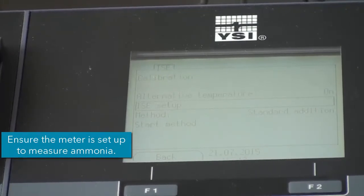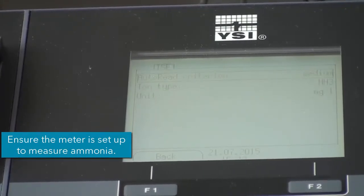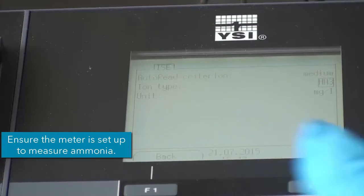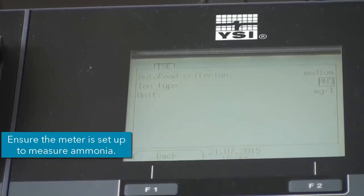So I will go into ISE setup, and I will choose the ion species that we are interested in. So you can select from a lot of different ion species, but we will select ammonia. So NH3.